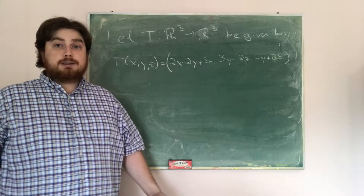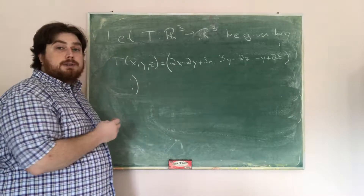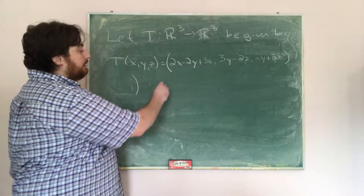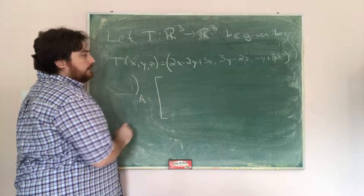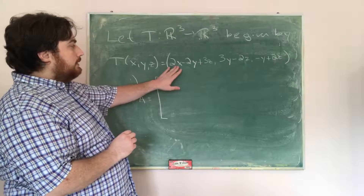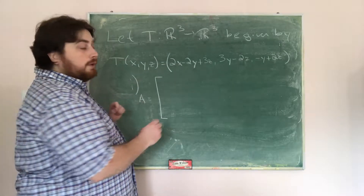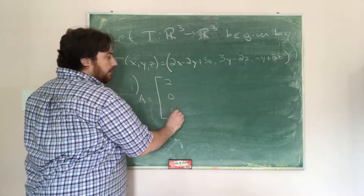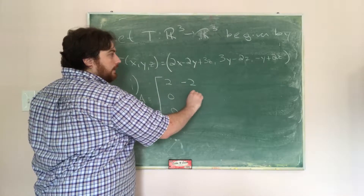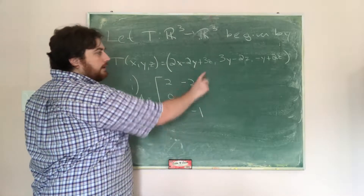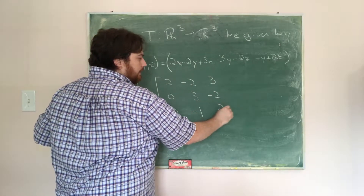In order to do that, we're going to break this into parts. The first step is to find the standard matrix of this linear transformation. To find the standard matrix, A, the coefficients in front of x's form the first column: 2, 0, 0. The y's are the second column: −2, 3, −1. And the coefficients in front of z are the third column: 3, −2, 2.